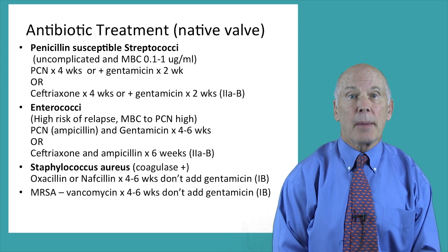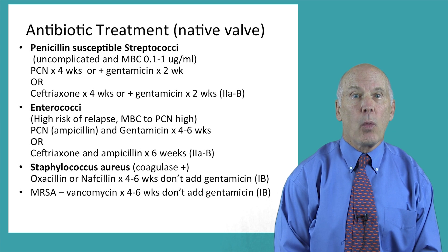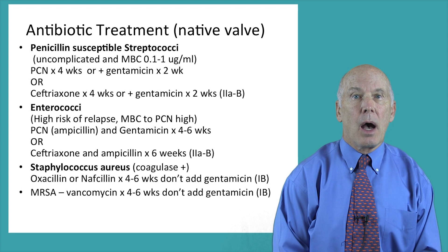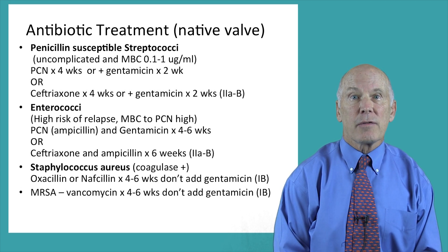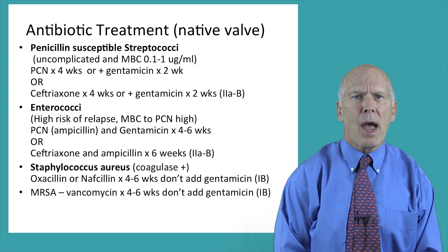Penicillin-susceptible streptococci with uncomplicated endocarditis and an MBC of 0.1 to 1 micrograms per mL can be treated with penicillin for four weeks, or penicillin plus gentamicin for two weeks, or ceftriaxone for four weeks, or ceftriaxone plus gentamicin for two weeks.